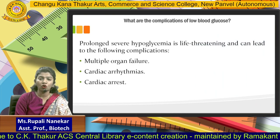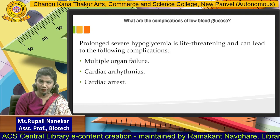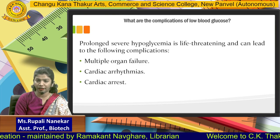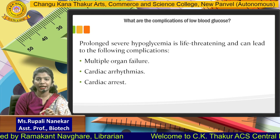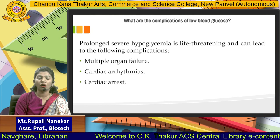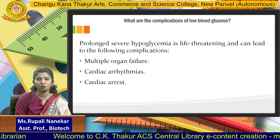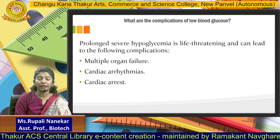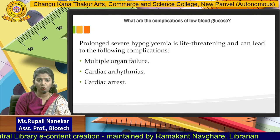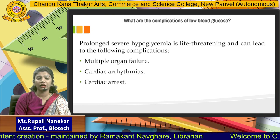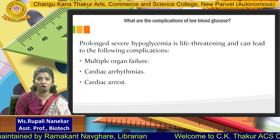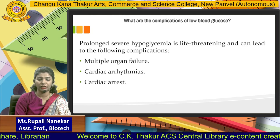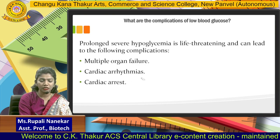What are the complications? Prolonged hypoglycemia is life threatening and can lead to multiple organ failure because glucose is not reaching your body. Second, cardiac arrhythmias — meaning improper heartbeats — can occur. The electrical impulses of the heart will not be proper, which is a serious complication of low blood glucose. You can also have cardiac arrest. Nowadays, a lot of young people below 30 are being reported with cardiac disorders and early-stage heart attacks.